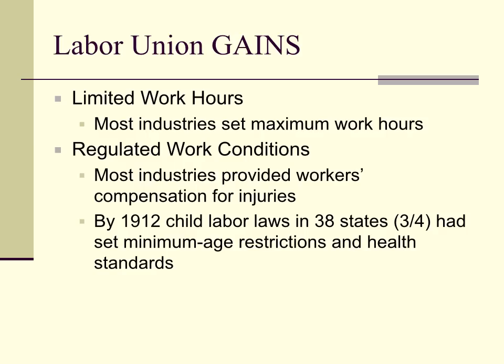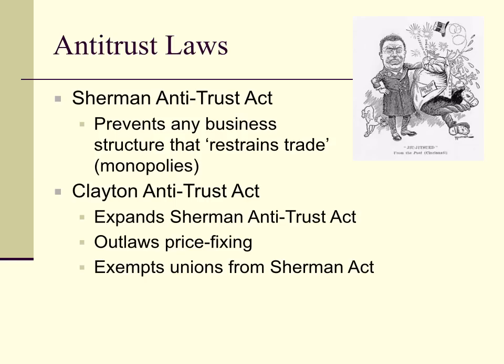Labor union gains: limited work hours — most industries set a maximum of 8 to 10 hours per day. Regulated working conditions — most industries provided workers' compensation for on-the-job injuries. By 1912, child labor laws in 38 states — three quarters of the states — had set minimum age restrictions and health standards. The Sherman Antitrust Act stated that any business structure that restrains trade or creates monopolies was illegal, protecting smaller mom-and-pop businesses.